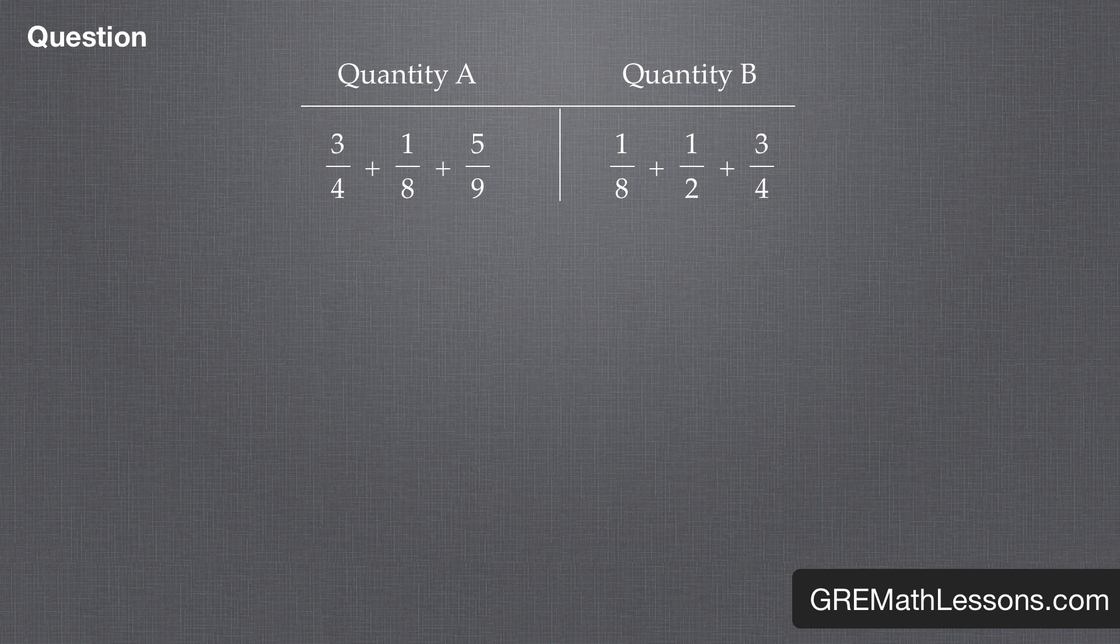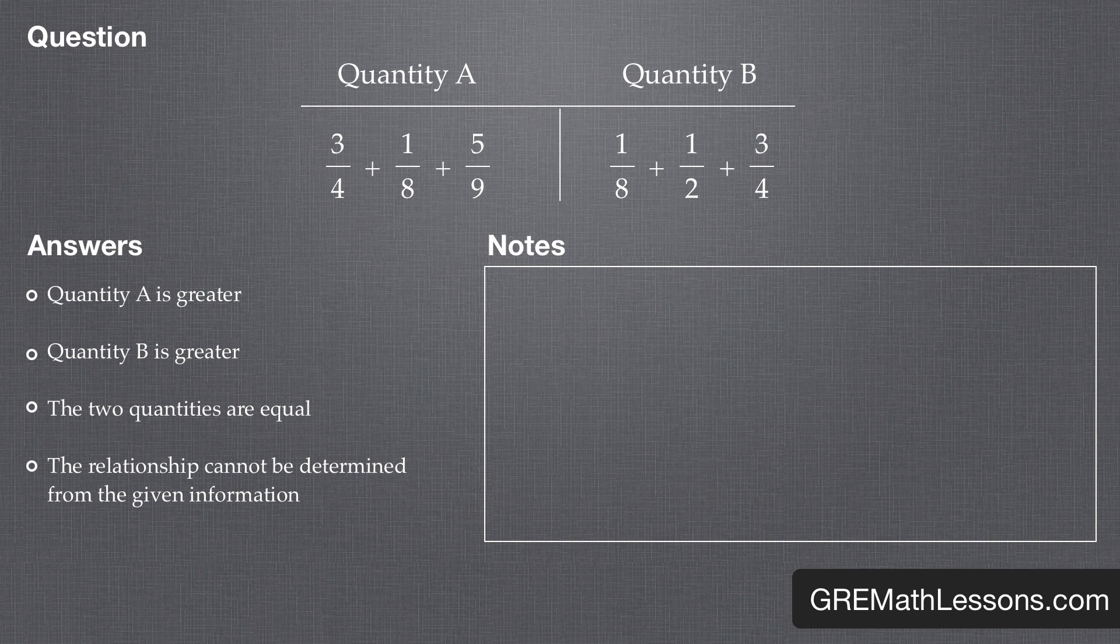As with all number comparison questions, we are given the following list of possible answers: Quantity A is greater, Quantity B is greater, The two quantities are equal, and The relationship cannot be determined from the given information.